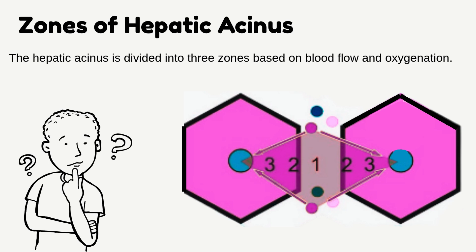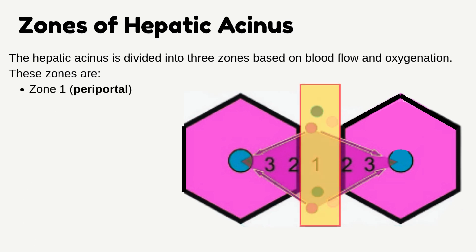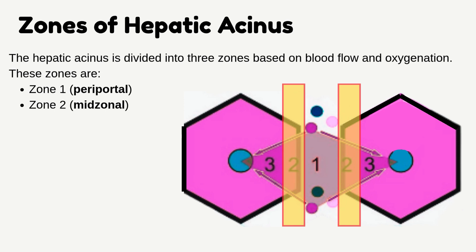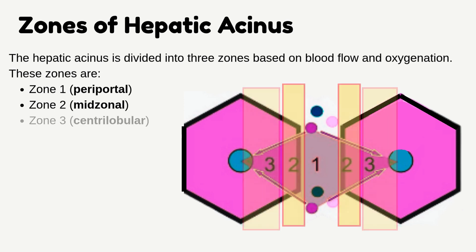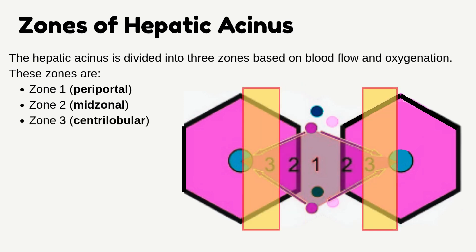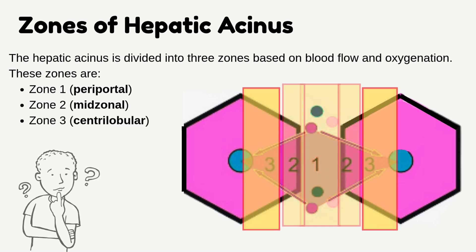The hepatic acinus is divided into three zones based on blood flow and oxygenation. These zones are Zone 1: Periportal zone, Zone 2: Midzonal zone, and Zone 3: Centrilobular zone.